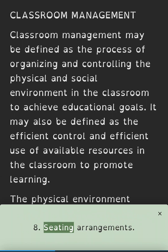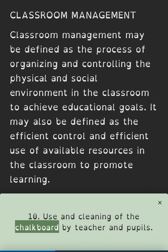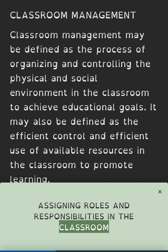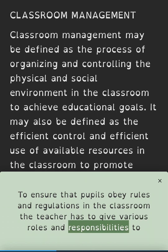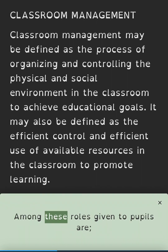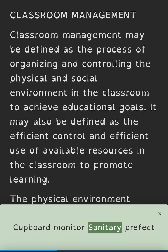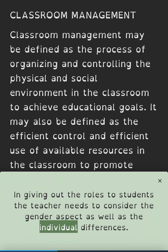Other routine activities include seating arrangements, checking the role, and use and cleaning of the chalkboard by teacher and pupils. Assigning roles and responsibilities in the classroom: to ensure that pupils obey rules and regulations, the teacher gives various roles and responsibilities to some pupils. Among these roles are Class Prefect, Cupboard Monitor, and Sanitary Prefect. In giving out roles to students, the teacher needs to consider the gender aspect as well as the individual, to ensure fair or balanced assigning of roles. There is no strict role that only boys or girls can perform.